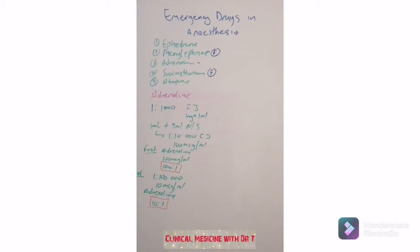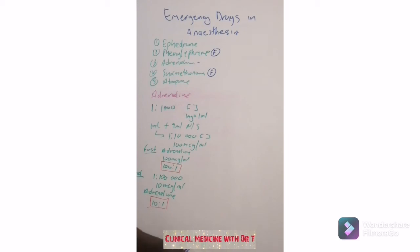Adrenaline can be used in many situations — anaphylaxis, and also to boost the blood pressure when ephedrine is no longer working. Remember, ephedrine takes advantage of the endogenous catecholamines. There's a point whereby the endogenous catecholamines secretion will be exhausted. At that time, no matter how much ephedrine you give, it just won't work. So there's a point where you're going to switch from ephedrine and go for adrenaline, simply because you've exhausted your endogenous catecholamines.